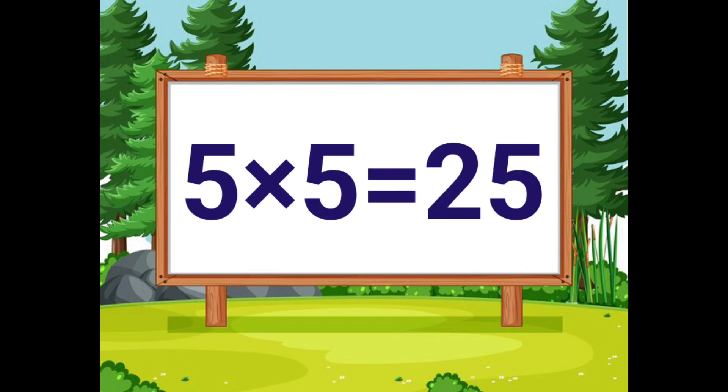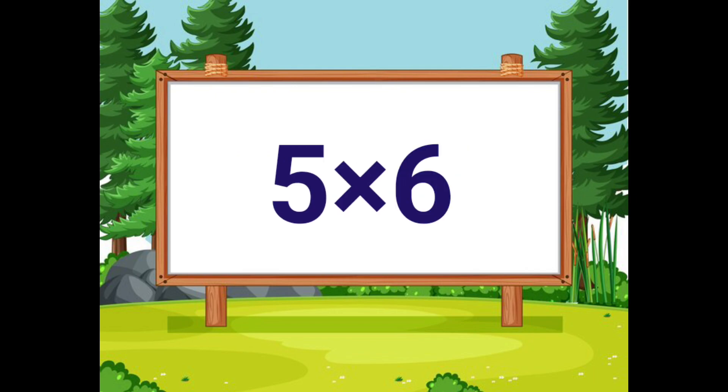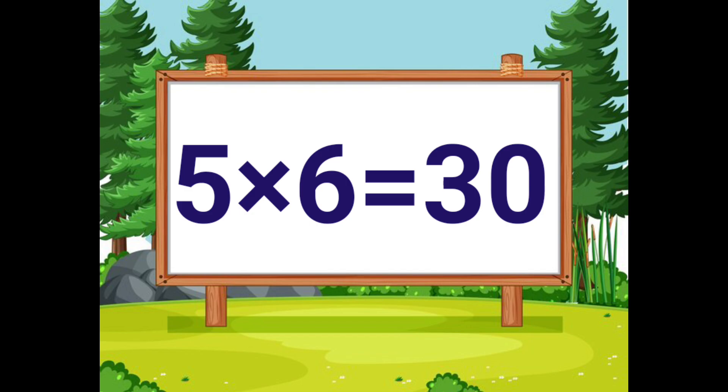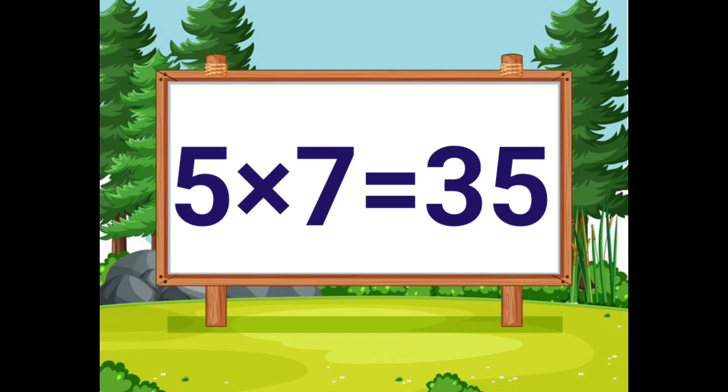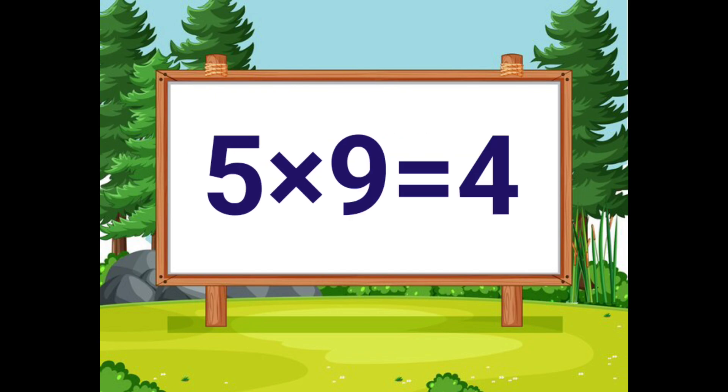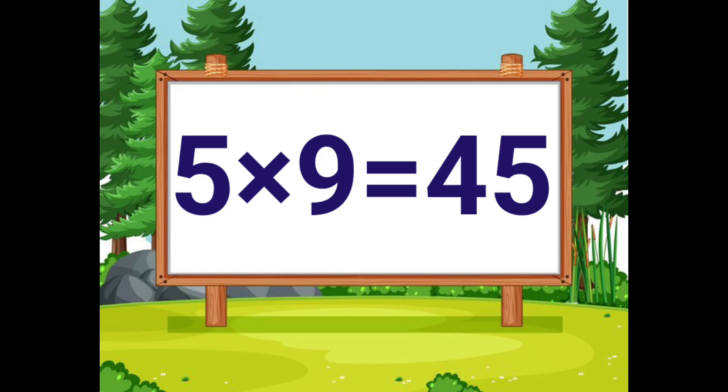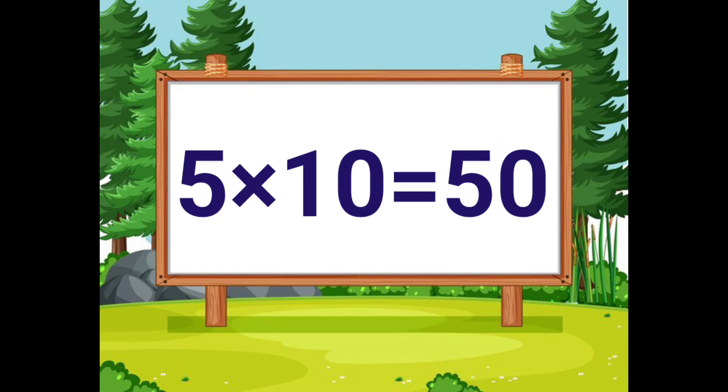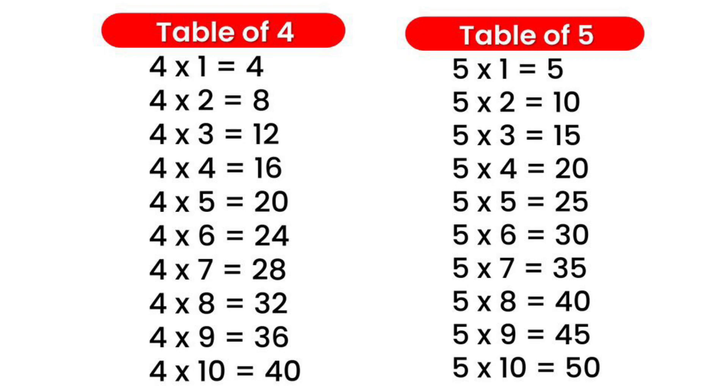Five times one is five, five times two is ten, five times three is fifteen, five times four is twenty, five times five is twenty-five, five times six is thirty, five times seven is thirty-five, five times eight is forty, five times nine is forty-five, five times ten is fifty. I hope you learned the 4 table and 5 table. We will see the 6 table and 7 table in the next video.